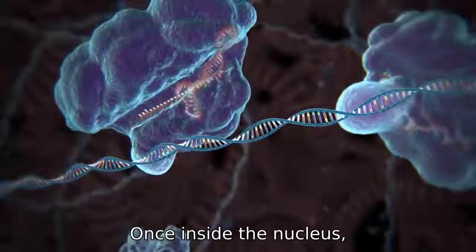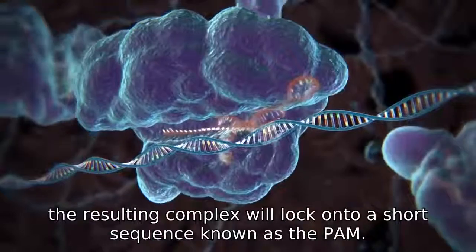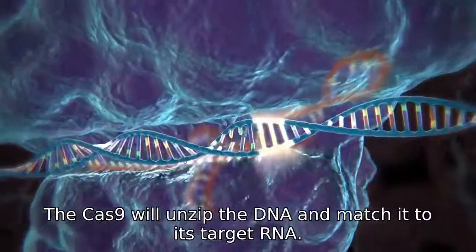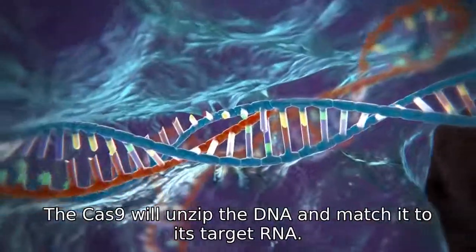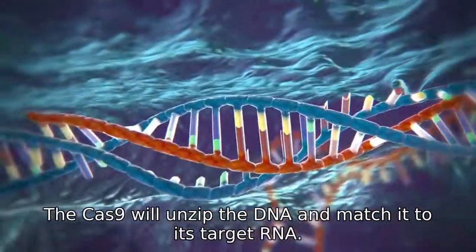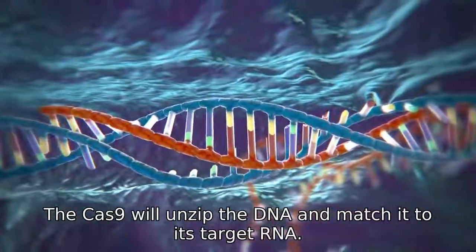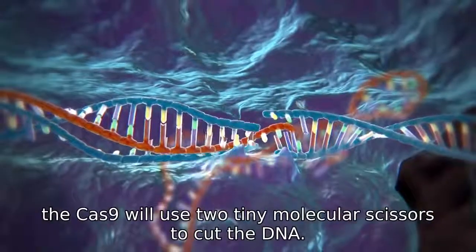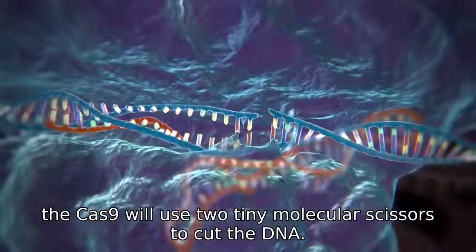Once inside the nucleus, the resulting complex will lock onto a short sequence known as the PAM. The Cas9 will unzip the DNA and match it to its target RNA. If the match is complete, the Cas9 will use two tiny molecular scissors to cut the DNA.